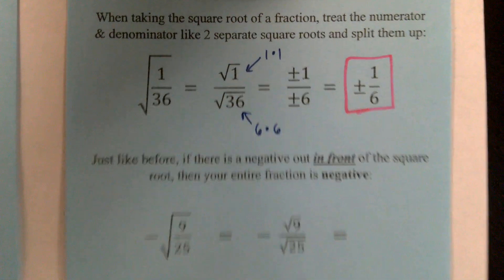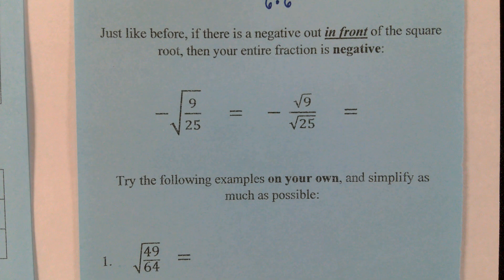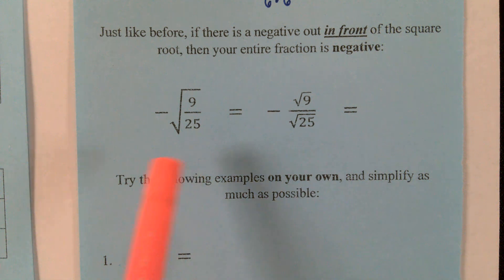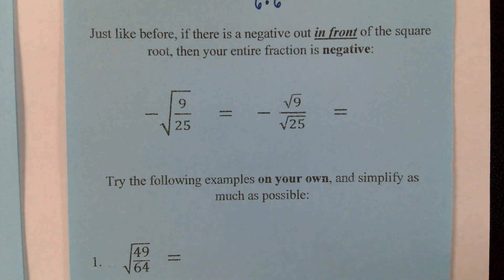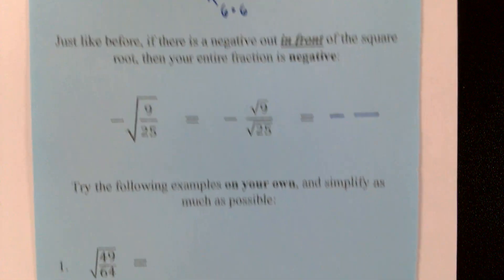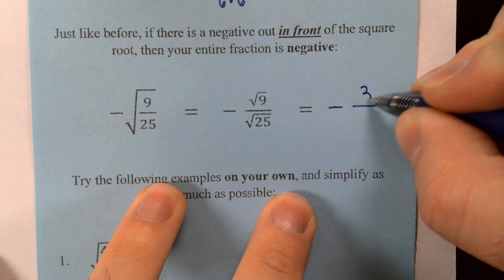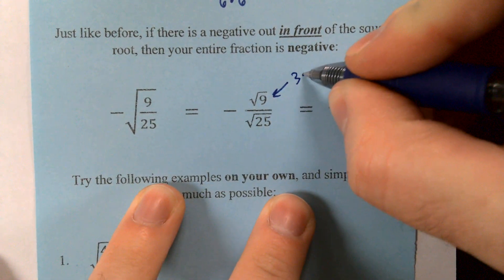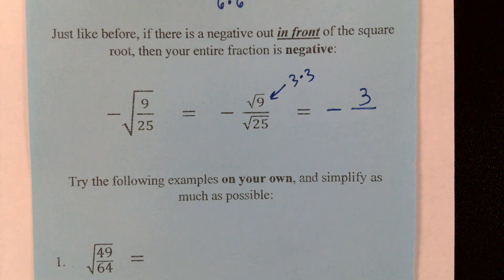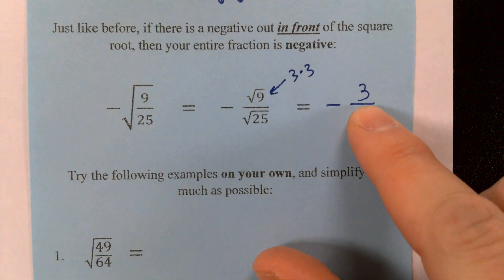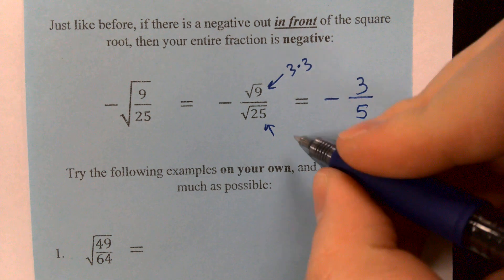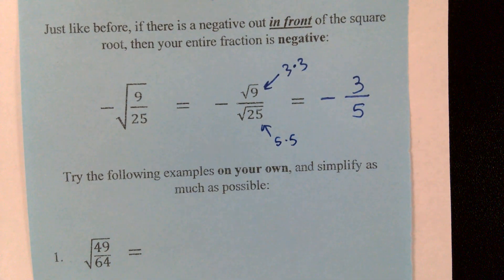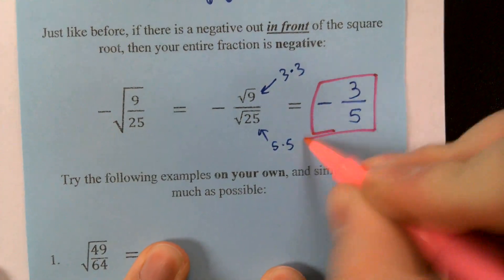Just like before, if there's a negative in front of the square root, your entire fraction is negative. So the negative square root of 9 over 25 splits into the negative square root of 9 over the square root of 25. What's my numerator? 3 — because 3 times 3 is 9. Noah broke 9 into its factors of 3 times 3, noticed they were identical, and pulled them out. And the new denominator? 5 — because 5 times 5 is 25. So our answer is negative 3 over 5.